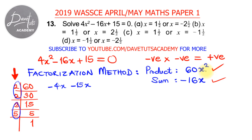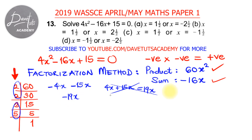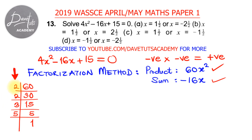But what about the sum? If we take positive values, 4x plus 15x is 19x — that's not minus 16x. If we take negatives, minus 4x plus minus 15x is minus 19x — also not minus 16x. So the 4x and 15x combination is not useful for us.